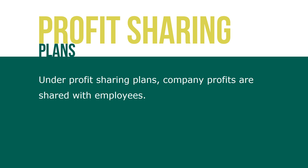Under profit sharing plans, company profits are shared with employees. Profit sharing can be distributed as cash or deferred. Under a deferred profit sharing plan, the incentive money is put into a retirement account for the employee. This has a tax advantage because the income earned is deferred until retirement, and since post-retirement earnings are generally lower, income withdrawn from the retirement account is taxed at a lower rate.